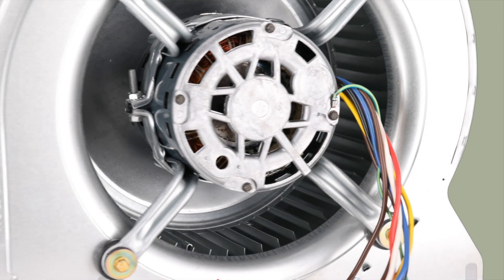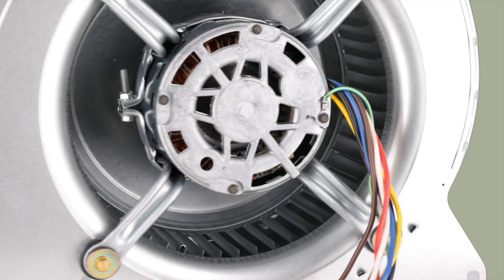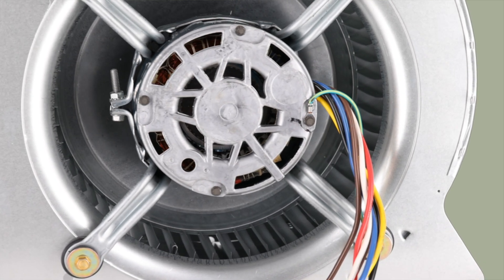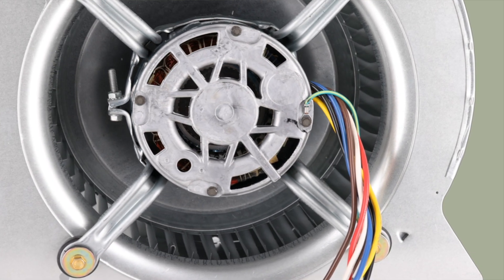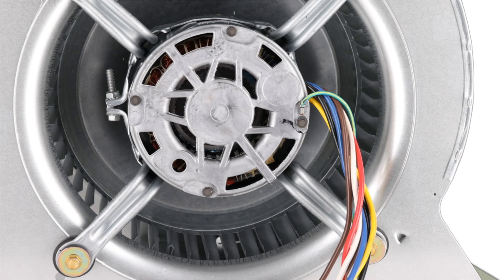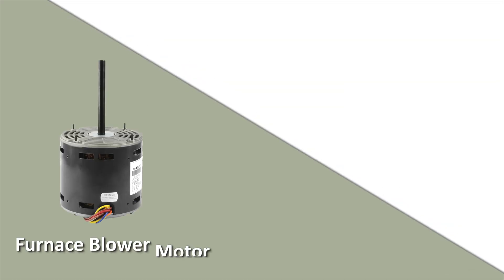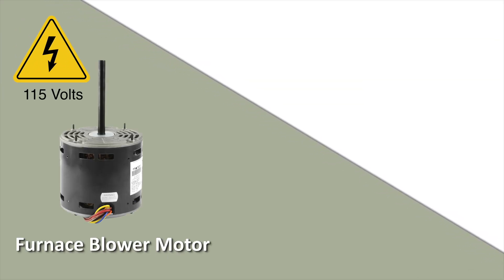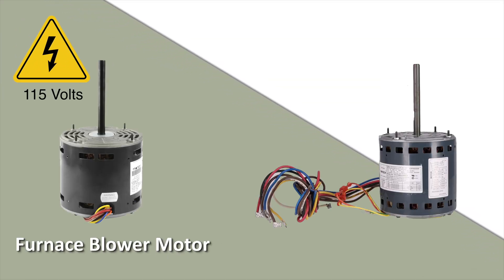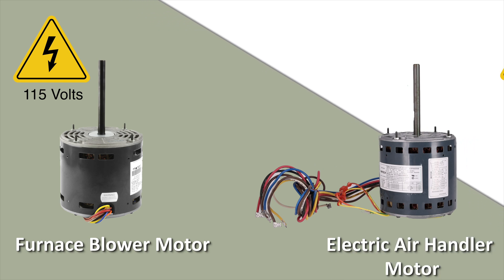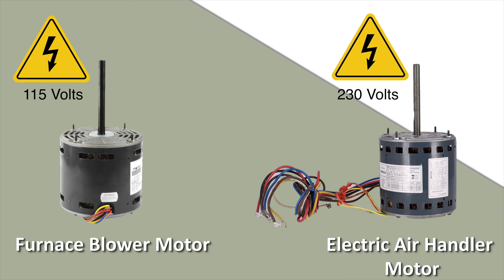There are different voltage configurations available. You need to be careful because selecting the wrong one will cause the motor to not work. For example, a furnace blower motor runs on 115 volts, while the motor in an electric air handler runs on 230 volts.